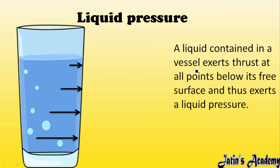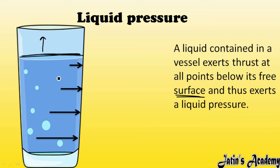A liquid contained in a vessel exerts thrust at all points. Below the free surface — meaning below the surface above which no water exists — each and every particle of the liquid exerts pressure on the walls of the container. This pressure exerted on the walls is known as liquid pressure.